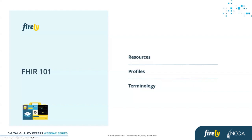For the payer side, we probably have explanation of benefits and claims that apply, and a lot of that works into quality reporting. These resources are structured in a JSON format — they could be XML or Turtle, though I've never personally used Turtle myself. They're usually in JSON and hosted on a FHIR server.